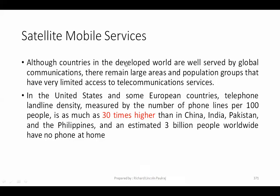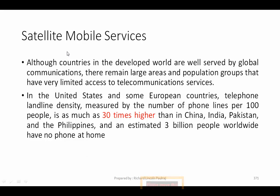Although countries in the developed world are very well served by global communications, there remain large areas and populations with very limited access to telecommunications services. We are not connected 100 percent globally. There can be areas with no signals — that's a global problem, not just local. Buildings, trees, factories, and city structures cause signals to fade away; these are the limitations of terrestrial networks.